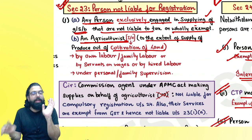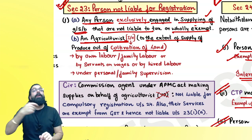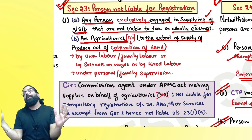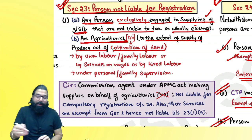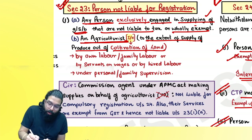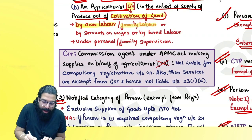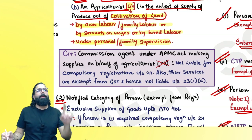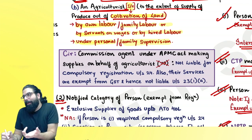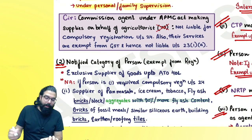Second category not required to take registration: agriculturists. An agriculturist who sells produce out of cultivation of land does not have to charge any GST even if sales are ₹5 crore or ₹10 crore — no registration is required. An agriculturist can be an individual or HUF who does cultivation of land through own labor, family labor, servants on wages, or hired labor under personal or family supervision.